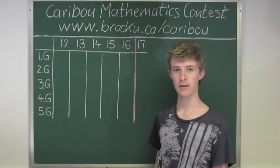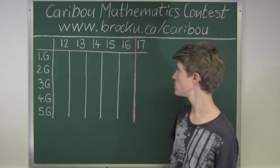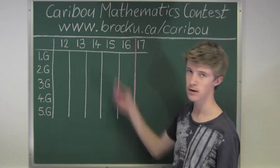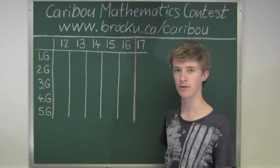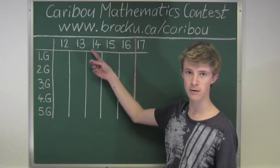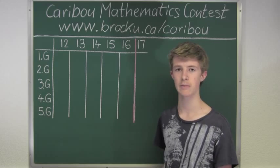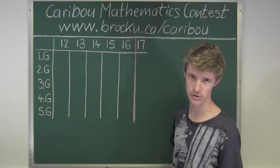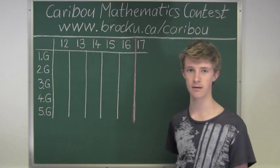Since we know that each Blorb's life cycle is only 2 hours, we can draw another line in between the 14 and the 15 — between 2 p.m. and 3 p.m. — because all the Blorbs born at 2 p.m. will die at 4 p.m. But since we want to know how many living Blorbs there are at 4:30 p.m., we draw that line in between 14 and 15.